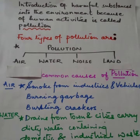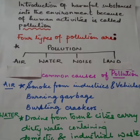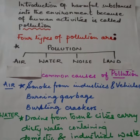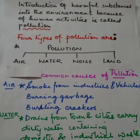और हम खेतों में जो fertilizer — chemical fertilizer — use करते हैं, या pesticides कीड़े-मकोड़े मारने के लिए जो chemicals use करते हैं, ये सब पानी में चला जाता है। जो पानी डालते हैं irrigation के लिए, उस पानी के साथ मिलके जमीन के नीचे चला जाता है, और उससे जमीन के नीचे वाला पानी भी दूषित हो जाता है।